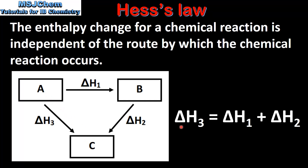This can be represented in equation form as delta H3, which is the direct route from A to C, is equal to delta H1, which is the route from A to B, plus delta H2, which is the route from B to C. So regardless of the route that we take to get from reactants A to product C, the enthalpy change will be the same.